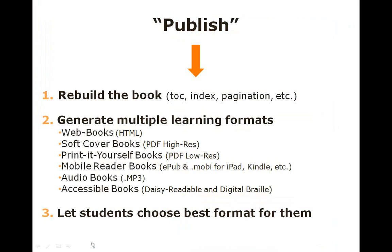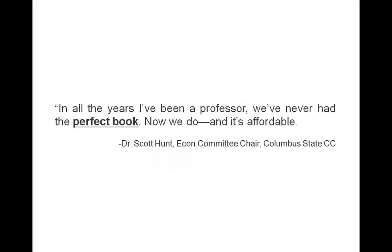Then you click Publish, and what's great about clicking publish is we rebuild the book — table of contents, index, pagination — to reflect the changes you made. As soon as you hit that publish button, we generate multiple learning formats: the web book, which everybody accesses for free; soft cover print books; print-it-yourself books; mobile reader books for iPad and Kindle; audio books; and Daisy readable and digital braille accessible books — allowing students to choose the format that's best for them.